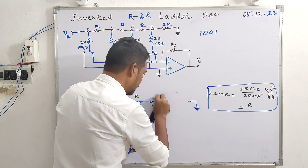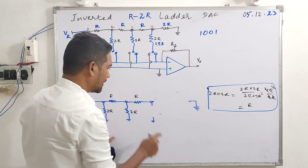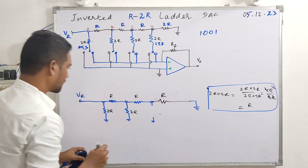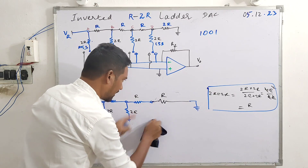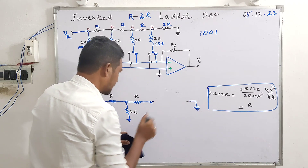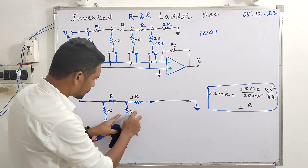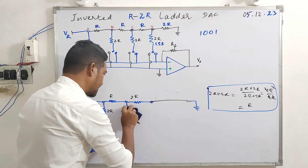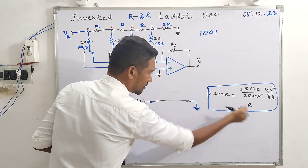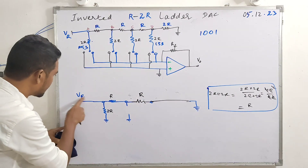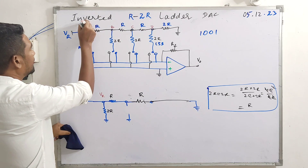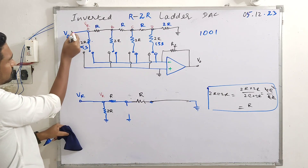Once again from this node, these two are in parallel with each other, so we can remove them and place a resultant R at this point. Going over here with R, and once again these two are in series, so they can be added to make 2R. These two are in parallel — shunt with each other — and one resistor replaces them. At node A, we have VR appearing straight away.